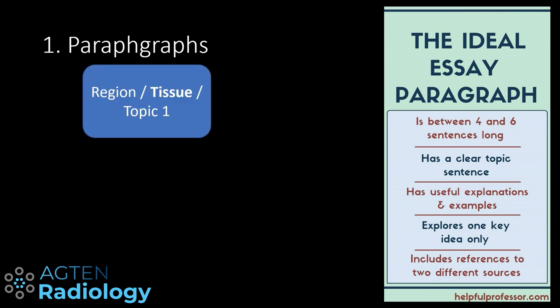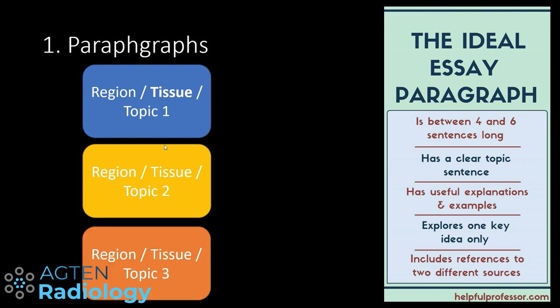In radiology it could look something like this. We have the first paragraph where we describe one region, one specific tissue, or one specific joint. Let's say we have a pelvis — we want to focus maybe on the bony structures first, then move on to the soft tissue like the muscles, then the tendons, and then the ligaments. You basically try to structure your reports using either regions, tissue components, anatomic structures, or any other topic that makes sense or matches your search pattern.